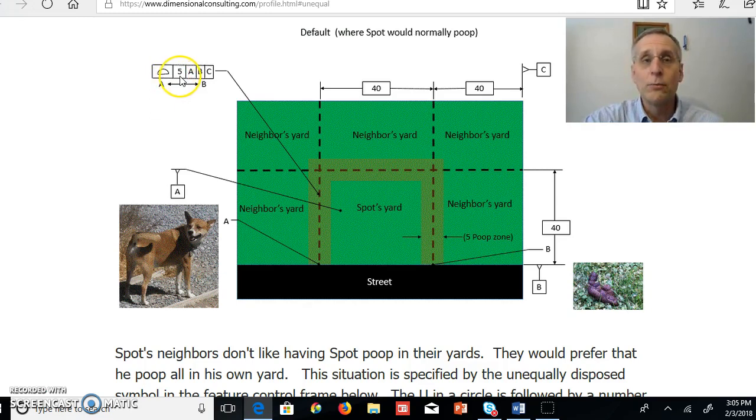By default, it's equal bilateral, and so he'll have a poop zone that is five feet wide. And it'll be half inside of Spot's yard and half outside of Spot's yard or half in the neighbor's yards.